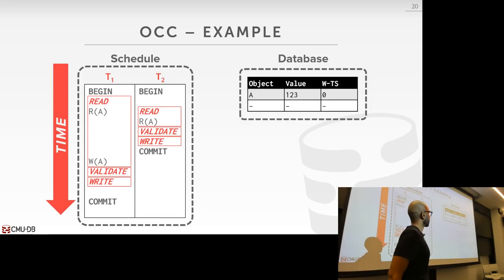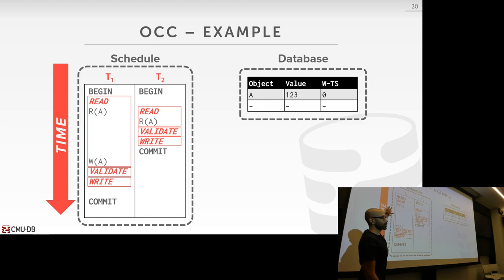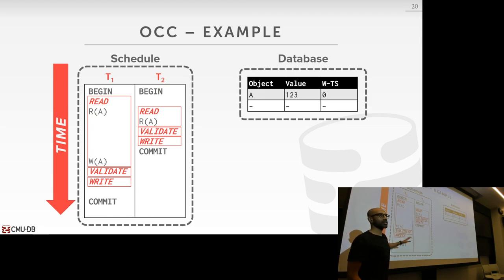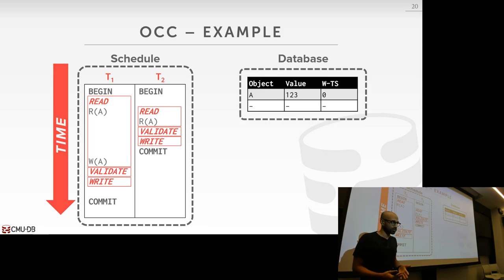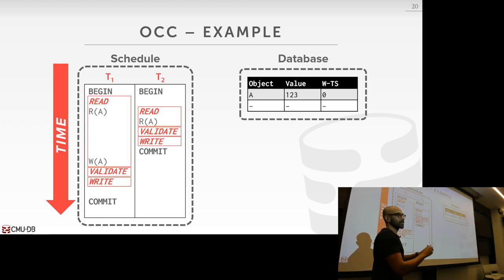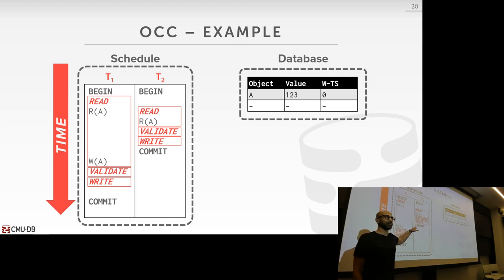Walking through an OCC example: the database now has only a write timestamp per tuple (no read timestamp). Transaction T1 begins and reads A, making a local copy with the write timestamp from the database. T2 begins and also reads A into its private workspace. Unlike basic timestamp ordering, timestamps in OCC are not assigned when the transaction enters the system — they're deferred to the validation phase.